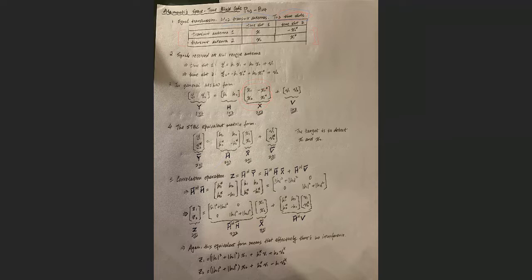This scheme uses two transmitting antennas and two receiver antennas. So two transmit antennas and two receiver antennas. The transmission pattern is designed to be an orthogonal matrix, which means the Hermitian transpose multiplied by X would be a scaled identity matrix.